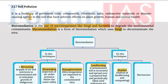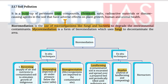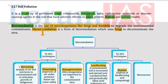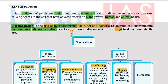Moving on to soil pollution — it is a buildup of persistent toxic compounds, chemical salts, radioactive materials, or disease-causing agents in soils, having adverse effects on plant growth and animal health. Bioremediation is the use of microorganisms like fungi and bacteria to degrade environmental contaminants. Mycoremediation is a form of bioremediation that specifically uses fungi to decontaminate an area.